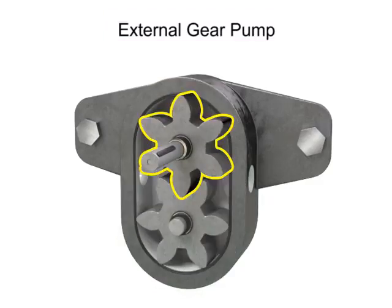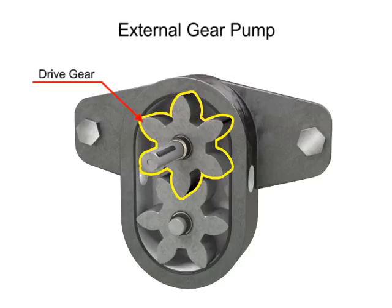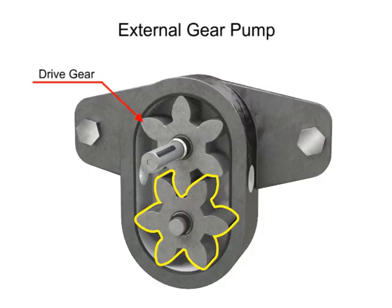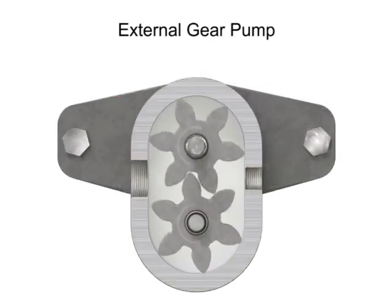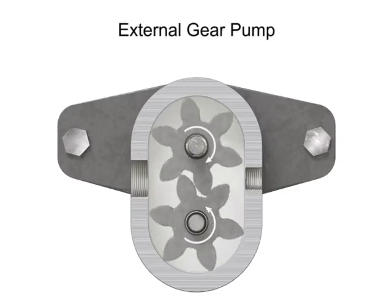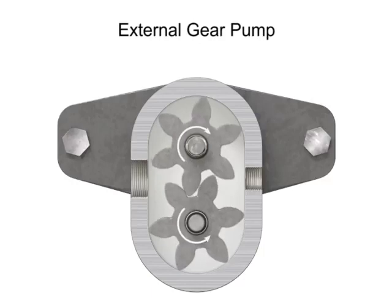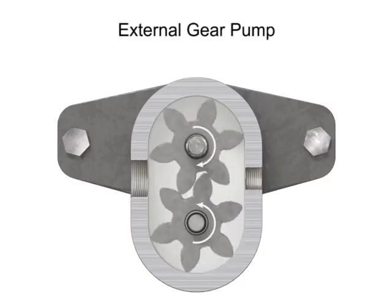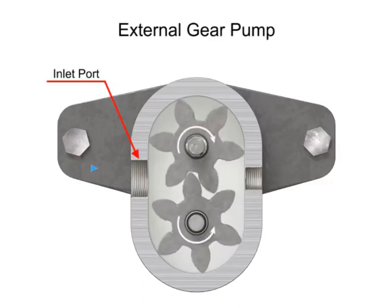One gear is driven by a motor connected to a shaft. This is called the drive gear because it is driven by a motor, and it in turn meshes with and drives the movement of the second gear. As the gears rotate away from each other and come out of mesh, they create an expanding volume on the inlet side of the pump, creating a vacuum at the inlet port allowing fluid to flow in.